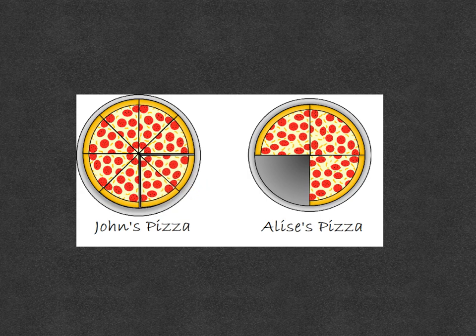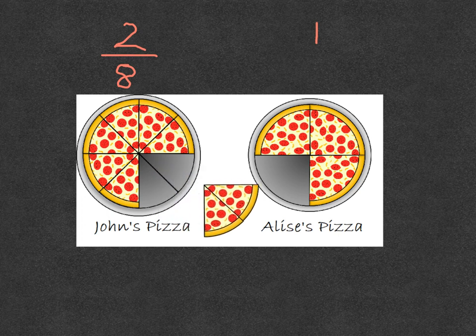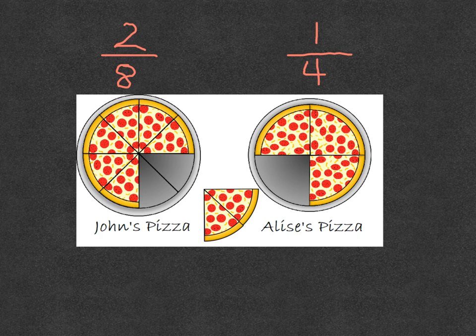But why would that be the same as Elise? She clearly only ate one piece of pizza. Well, the pizzas are the same size. Elise's pizza was cut into larger slices than John's pizza. So when she ate one out of four pieces of pizza, we can see that that is actually the same amount as what John ate.